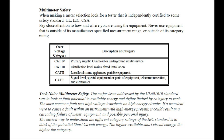Multimeter safety: the major issue addressed by the UL 61010 standard was to look at fault potential relative to available energy and define limits by category. The most common fault was high voltage transients on high energy circuits. If a transient were to cause a fault within an instrument with high energy present, it can result in a cascading failure of meter equipment and possible personal injury.